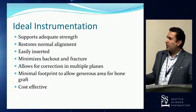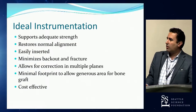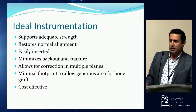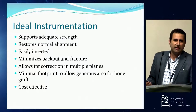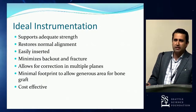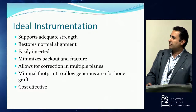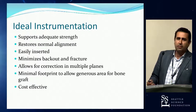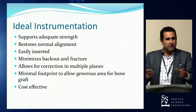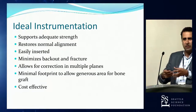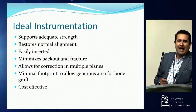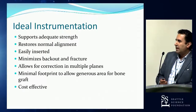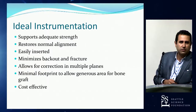The ideal instrument has to be strong and not fail, since its goal is achieving stability. It must help restore normal alignment, be easy to insert, and be user-friendly. Its inherent properties must be stable — resistant to back-out or fracture. It has to allow correction in multiple planes, allow a generous surface area for fusion with a minimal footprint, and it must be cost-effective so hospital systems will allow us to use it.